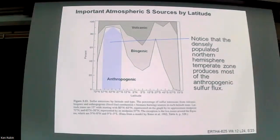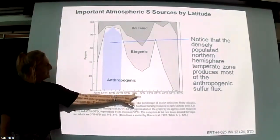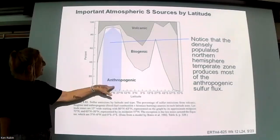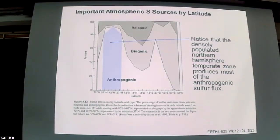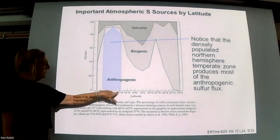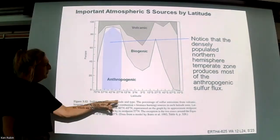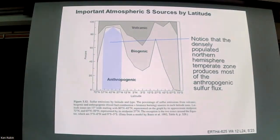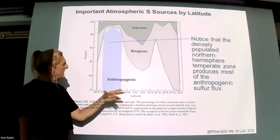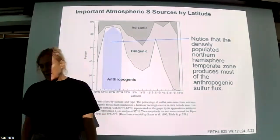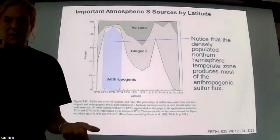There are latitudinal variations in sulfur sources. In temperate northern latitudes — where most industrialization and transportation occurs — anthropogenic sulfur is about 90% of the total. In other regions it's more split. Unless you get very far south where there's little human habitation, there's always some anthropogenic impact alongside biogenic and volcanic sources. Interestingly, there's more volcanism near the equator than in the extreme south, related to where the land and volcanic processes happen.